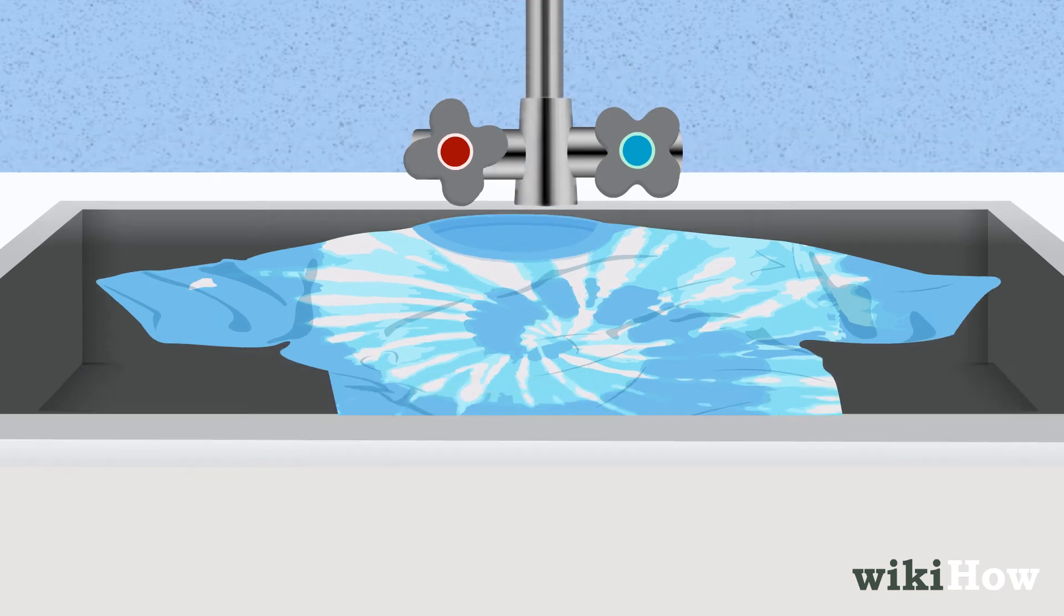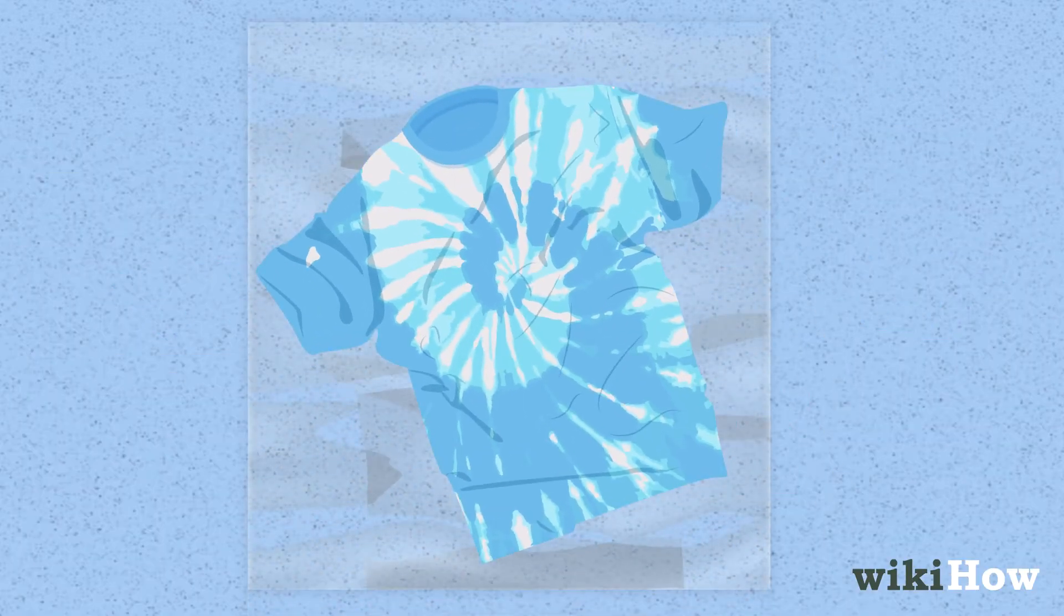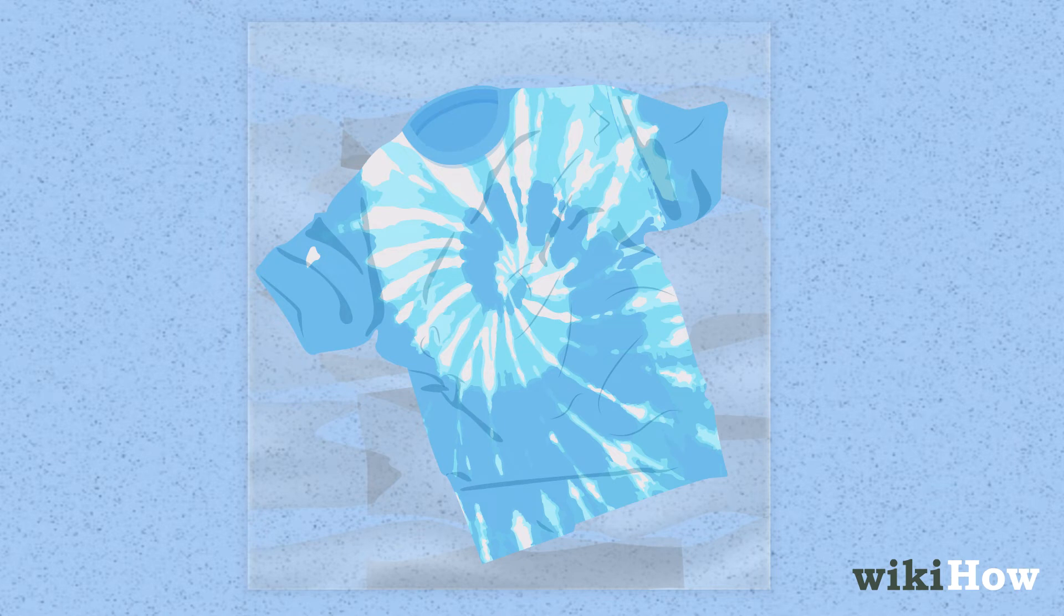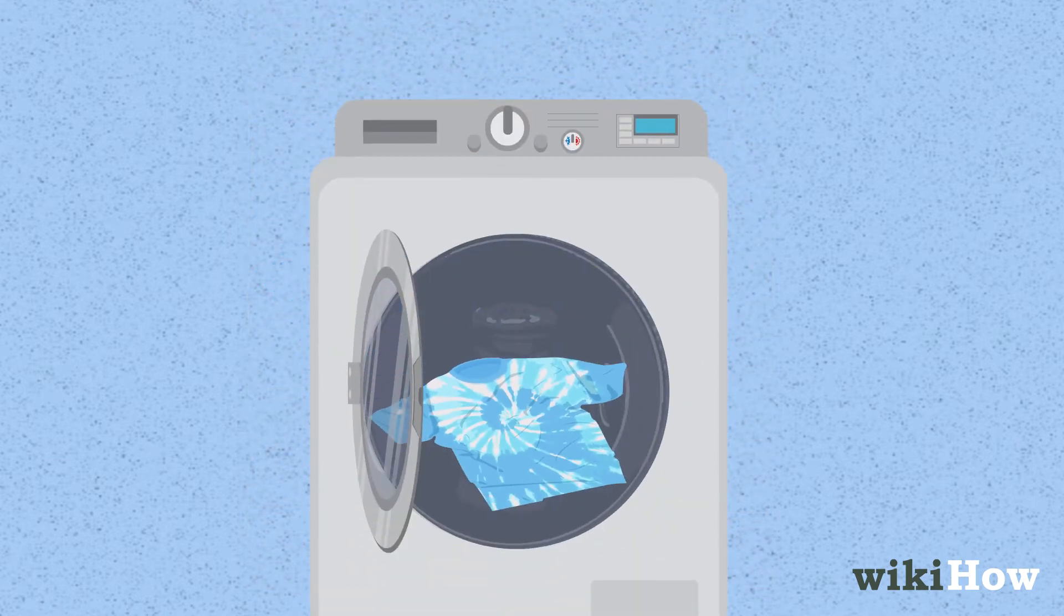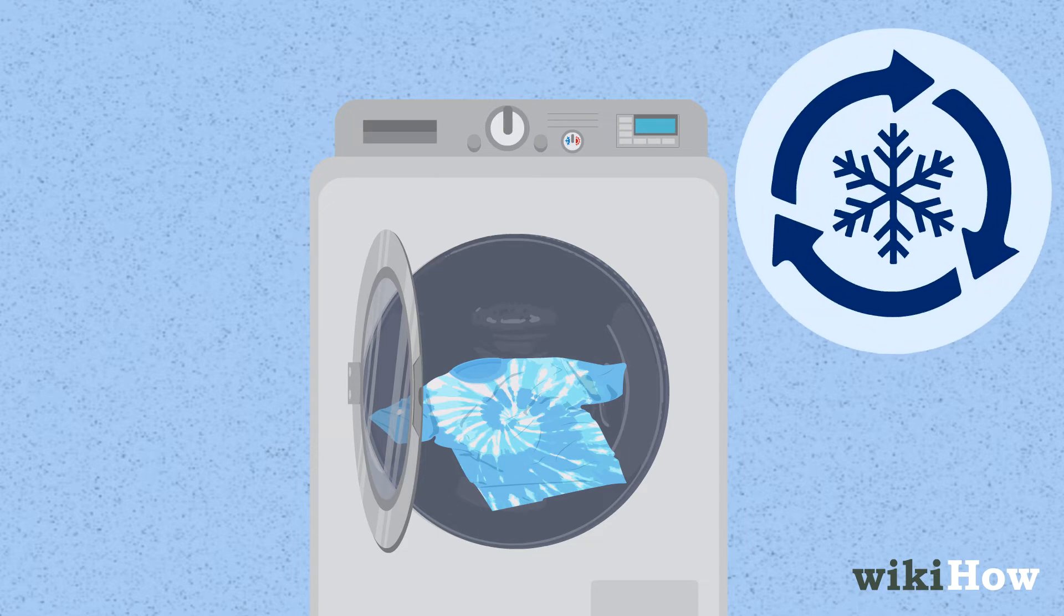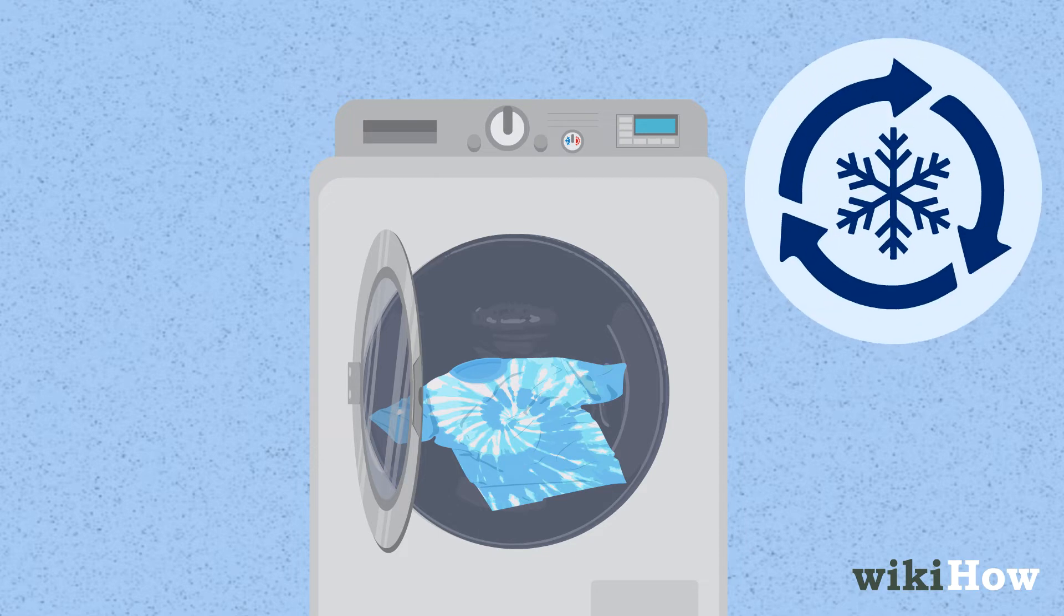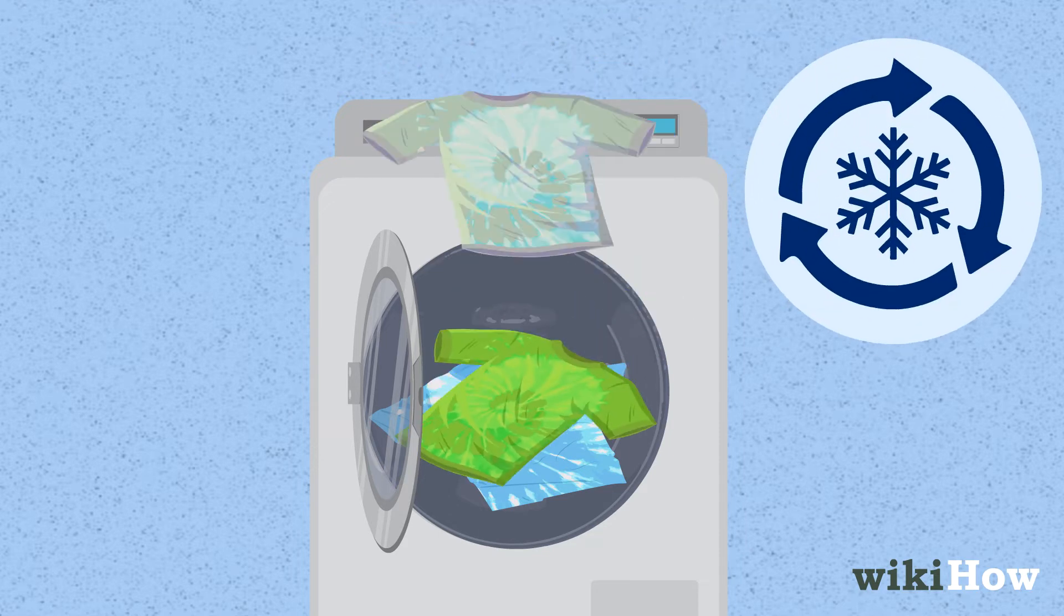When you're done rinsing, lay your fabric out on a large piece of plastic wrap to protect the surface underneath until you're ready to wash it in your washing machine. Set the washer on a normal cold water cycle and load your tie-dyed fabric in with no more than 4 other tie-dyed items.